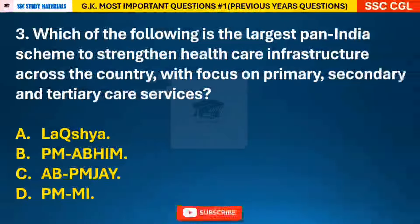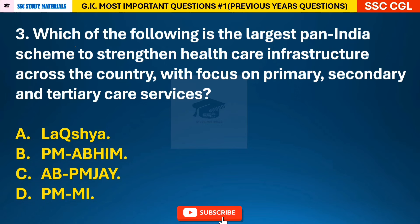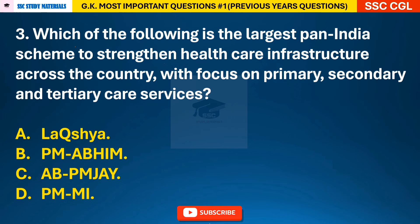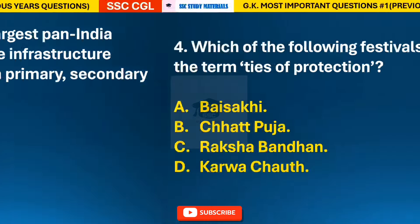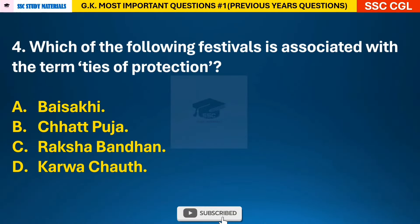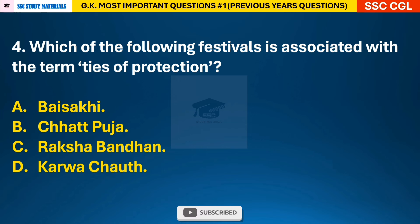Question 3: Which of the following is the largest pan-India scheme to strengthen healthcare infrastructure across the country with focus on primary, secondary and tertiary care services? — answer B: PM Abhim. Question 4: Which of the following festivals is associated with the term 'ties of protection'? — answer C: Rakshabandhan.